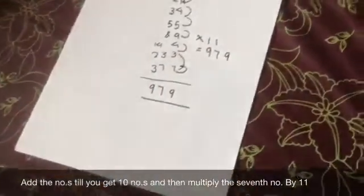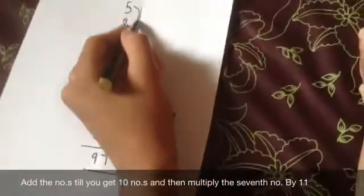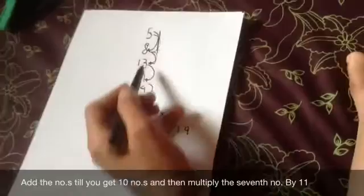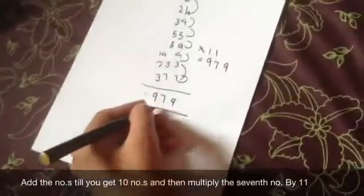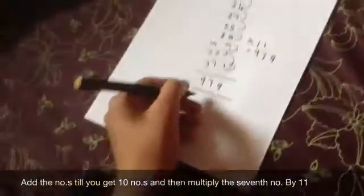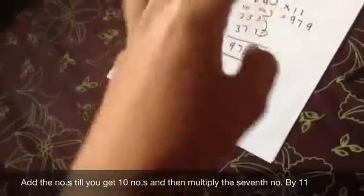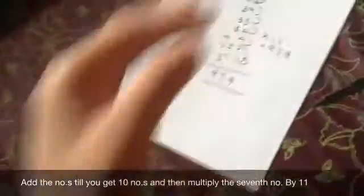You can play this trick on your friends by telling them to write any two numbers vertically and adding them together till they get 10 numbers, and adding all the 10 numbers. You can tell them the number in a minute or in a second. Just multiply the 7th number by 11. Bye bye.